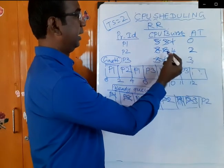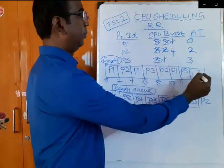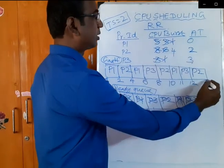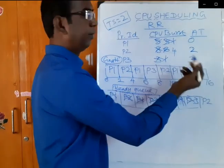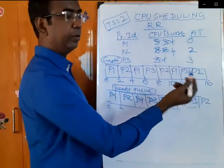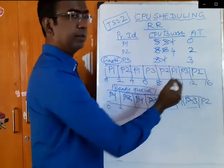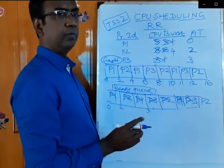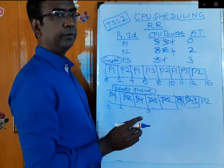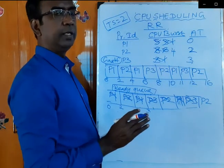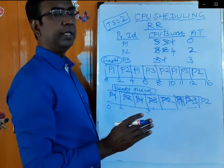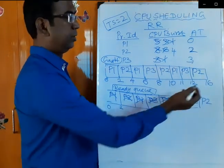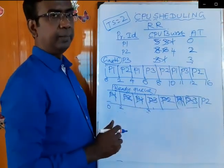Then P3 again executes for one second and completes its job. The leftover is only P2. P2 will be allotted the remaining four seconds because no other jobs are available in the ready queue, so it will take the entire remaining CPU time. By time 16, all processes will be complete.